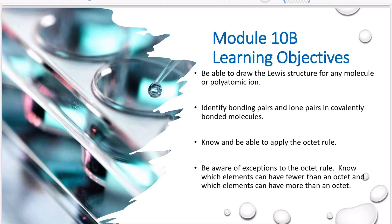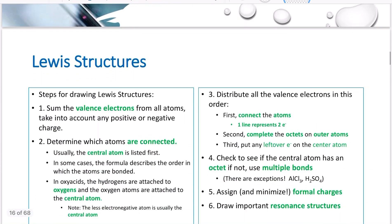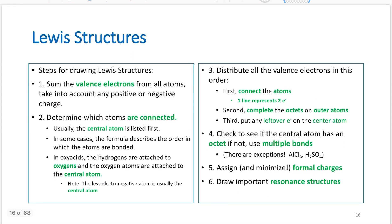Module 10b, we're getting into Lewis structures. Lewis structures is just a 2D representation of how the molecules are actually connected. You need to know these rules. I do it more by just knowing the process, so the more practice you do, the more compounds you draw out, the easier this will be. Please practice this a lot.